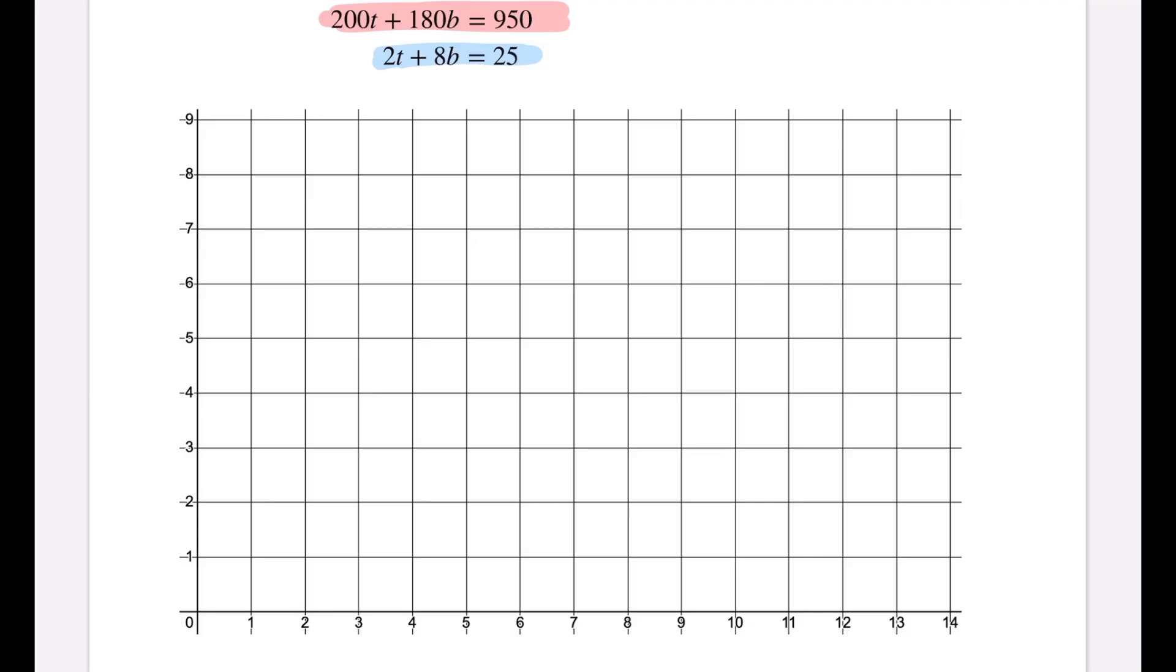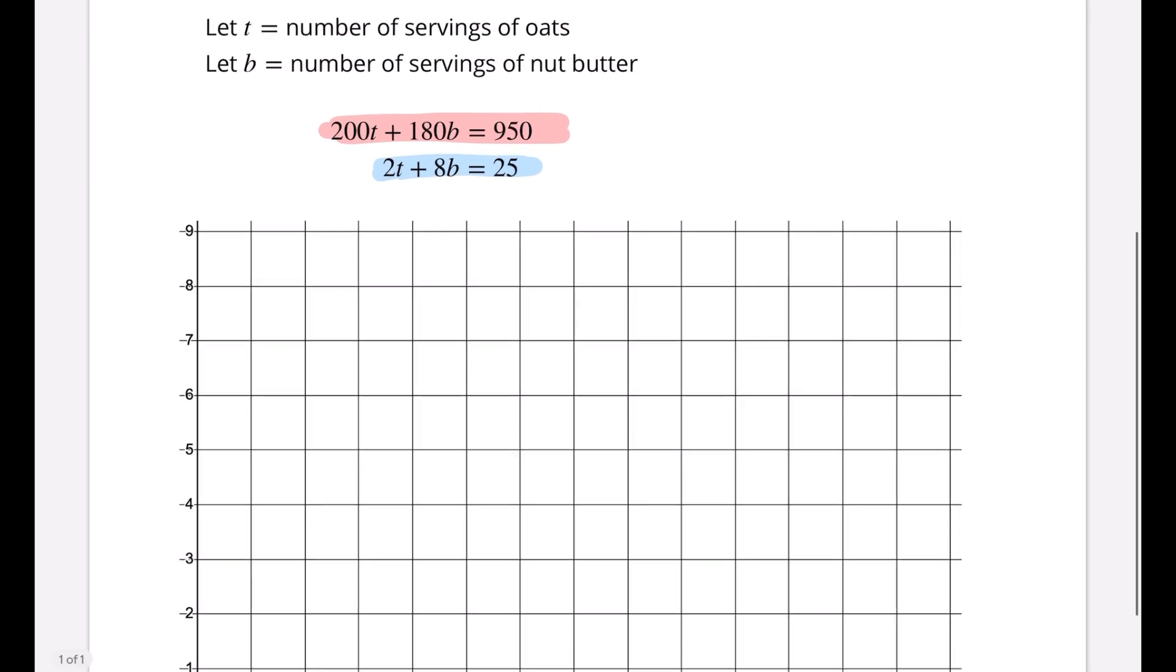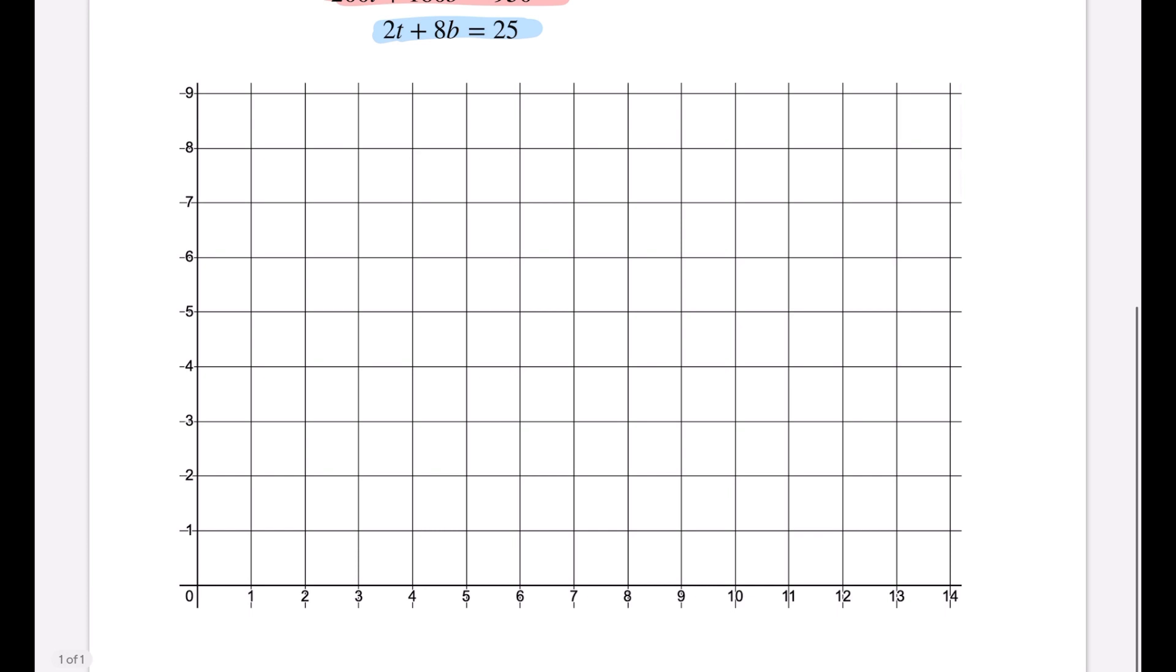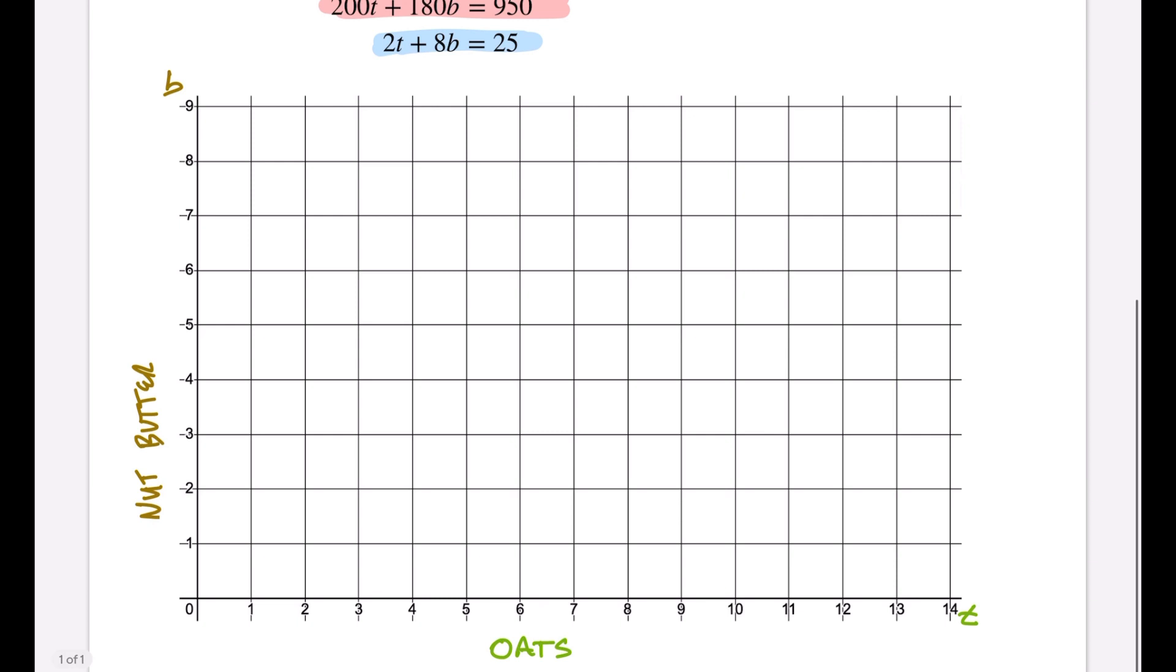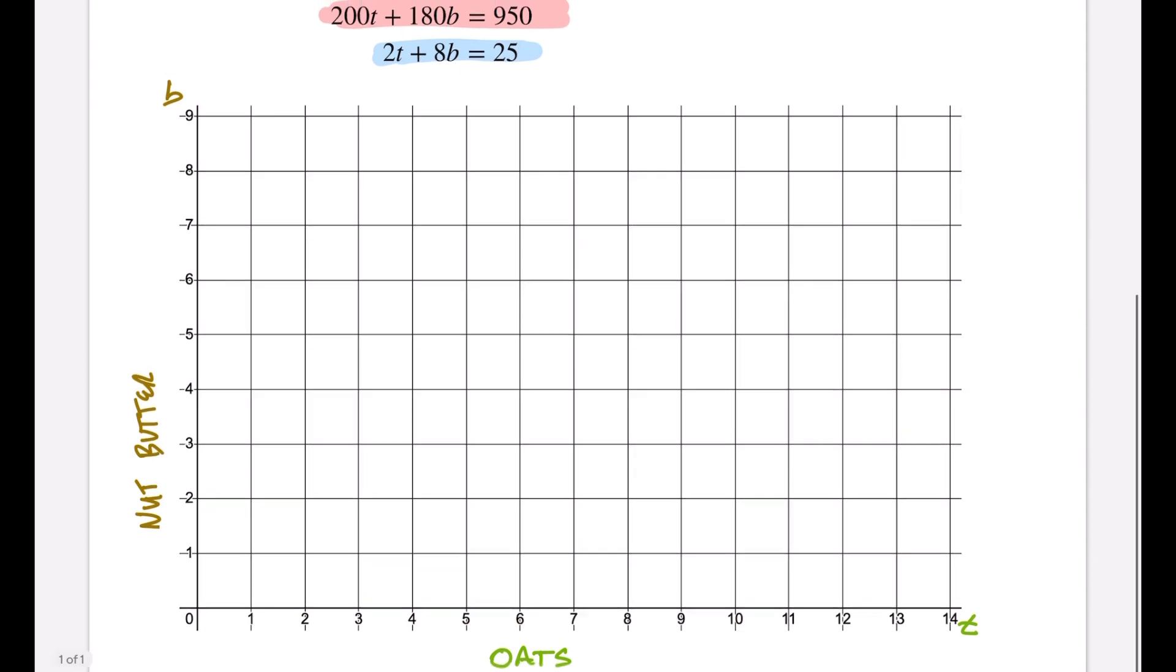Before we can find what the x and y-intercepts are, or the t and b-intercepts, we have to know what each axis represents. So we'll let t equal the oats and put the oats down on the bottom. This will be t, which means this one up here is b and we'll call this nut butter. It's not easy writing sideways. Okay, so how do we find the intercepts for nut butter and oats for these two equations? Here's a little trick.